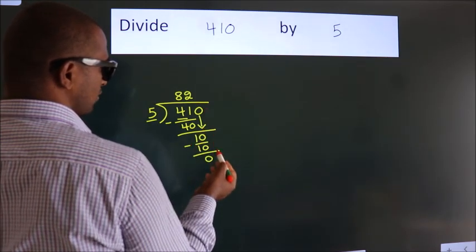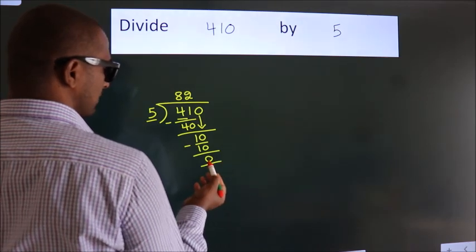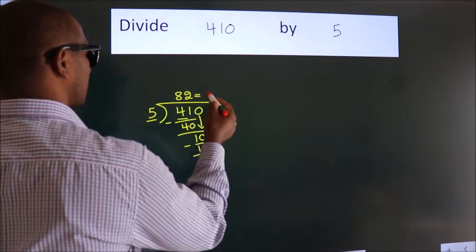We get 0. After this, no more numbers to bring it down. And we got remainder 0. So this is our quotient.